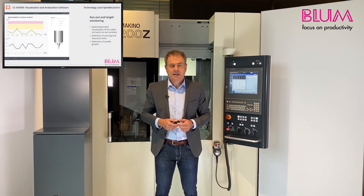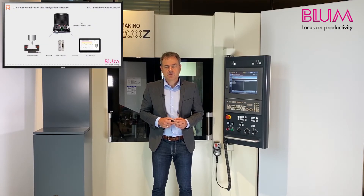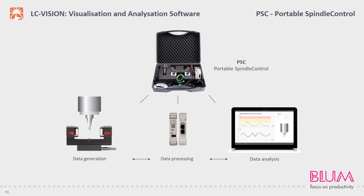The radial and axial run-out behavior of the spindle can be detected and visualized irrespective of speed. The definition of warning and tolerance limits provides an easy way to monitor spindle growth. In situations where no laser measuring system is installed on the machine, we also offer a mobile variant, the PSC. This plug-and-play solution allows all necessary components to be installed easily and quickly without a direct connection to the machine control.